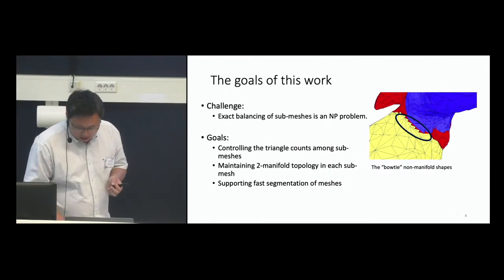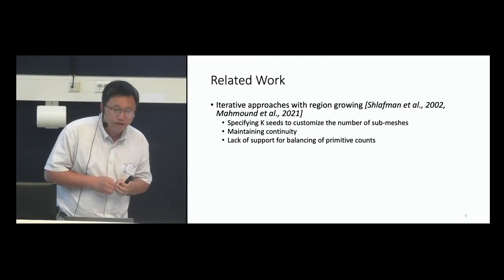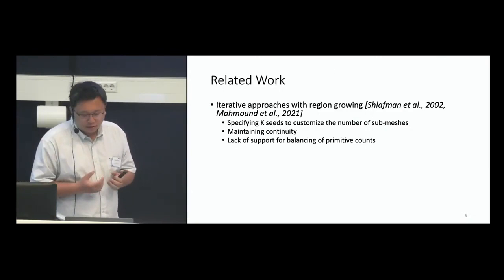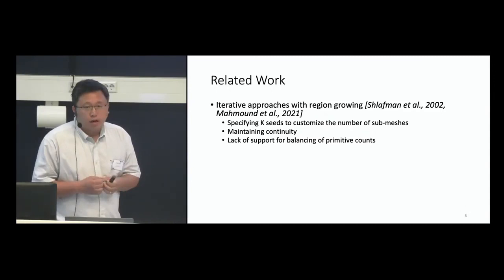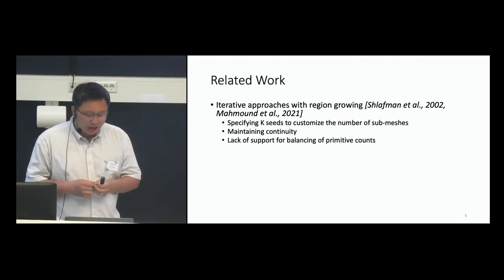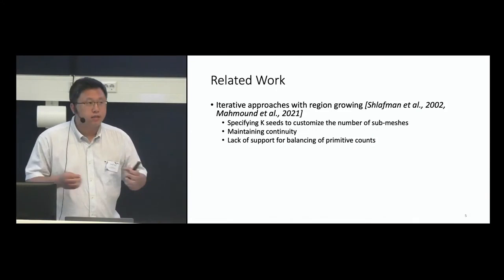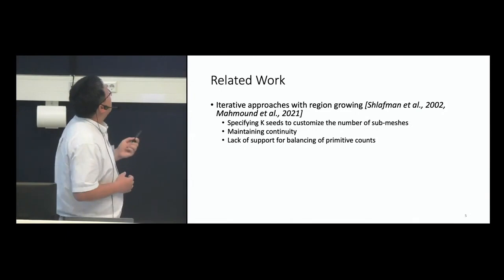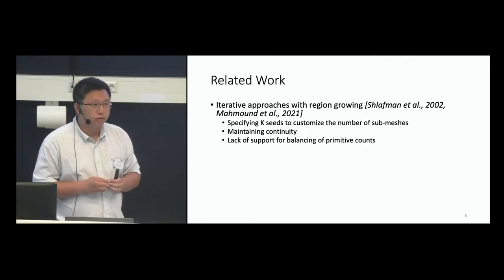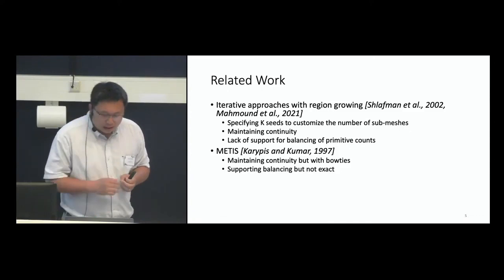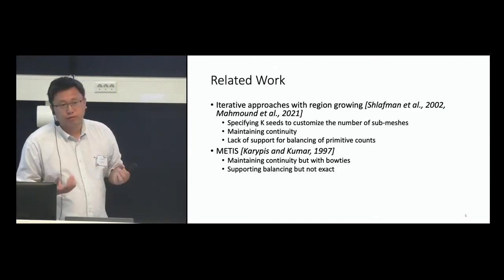Looking at the literature, the common approach is the region growing approach. This is also represented in the paper called RxMesh and in a recent paper as well. You can specify K seed triangles to customize the number of submeshes and then grow them into continuous patches. The good thing is that continuity is maintained — there is a guarantee of edge-connected patches. However, there is a lack of support for balancing; there is no guarantee the triangle count will be balanced. Another approach, somewhat older but state-of-the-art, is called Matisse, a well-known library used by many researchers in geometry processing.